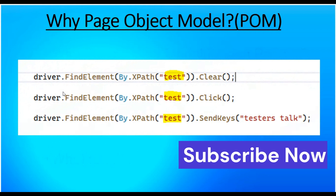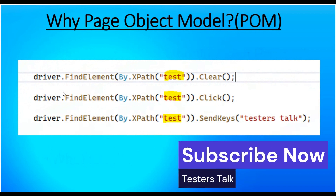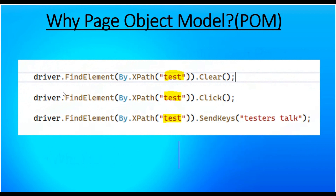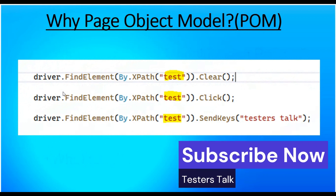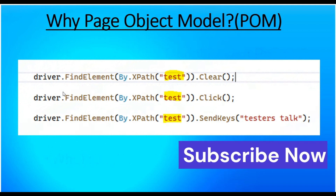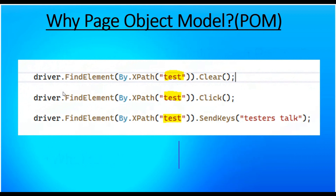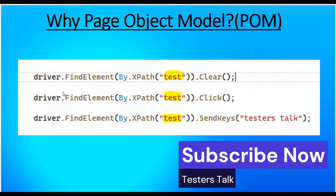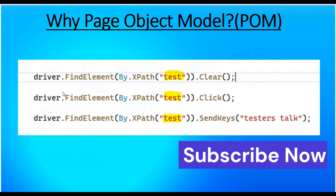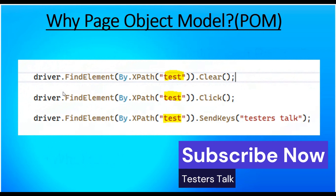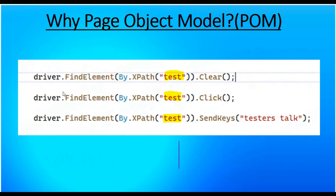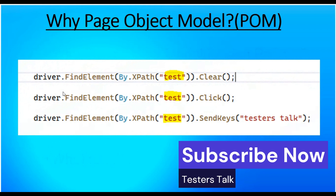Let's assume we have 100 test scripts or 100 step definition classes. Wherever we need to perform an action on an element, we might have done it in a similar fashion. So tomorrow a developer will come to you and ask you to run the test suite. In that case you will execute the test suite and find that a lot of automations failed because of a NoSuchElementException, because the developer might have changed the web page attributes for some reason.